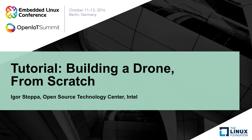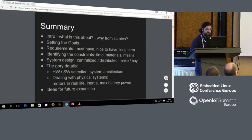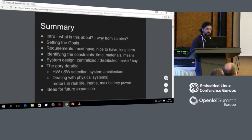Let's get started. What is this about? Why from scratch? We're going to see what we want to do, what we want to have, what is going to work against us, how we can overcome these constraints, the details of what choices we're going to make, and eventually what would be nice to do in the future.